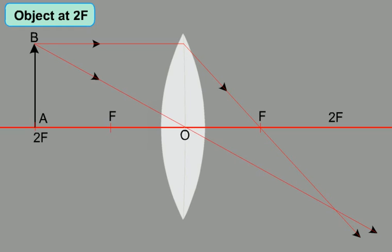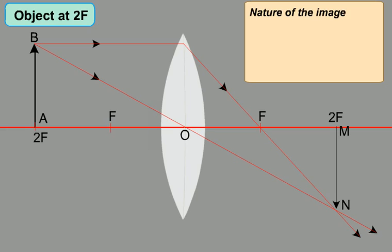Take another ray coming from the head of the object and passing through the optical center O of the lens. The ray, after refraction, passes undeviated and meets the previous ray at 2F. Hence, image MN will be formed at 2F on the other side of the lens. The nature of the image will be real, inverted, and will be the same size as the object.